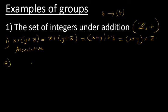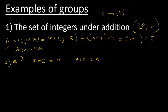Let's find out what the identity is. From the definition of identity, if you take any element from the set of integers and do the star operation with the identity, you should end up with the same element. The star operation here is usual addition: x plus E equals x, so E equals zero. Therefore in this case the identity is zero.